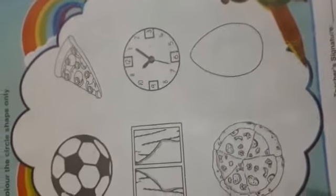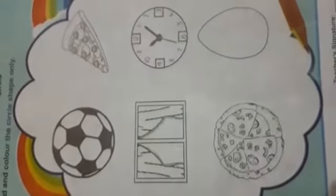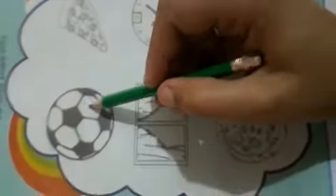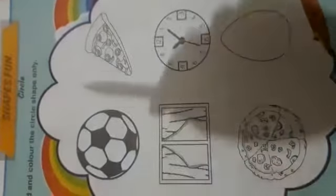Here we have different pictures. Here we will identify the circle shape and then we will color it. First of all, ball. What is the shape of the ball? Circle. Anyone tell me, is this shape a circle?